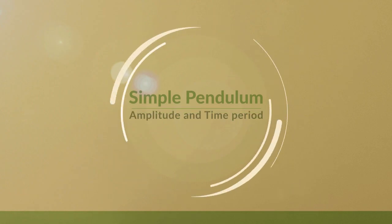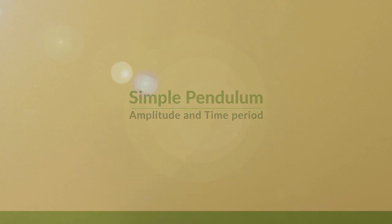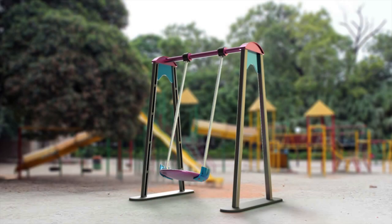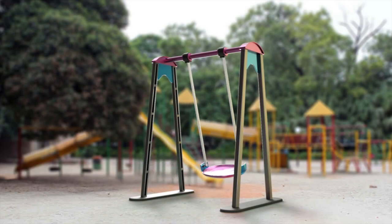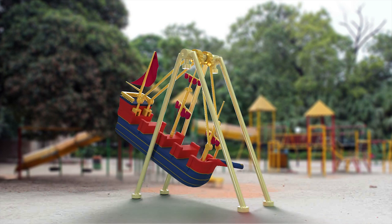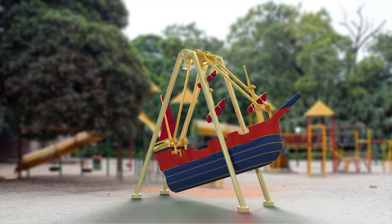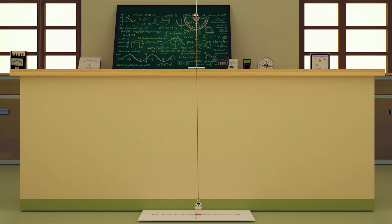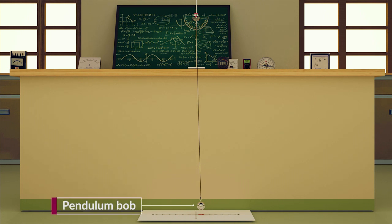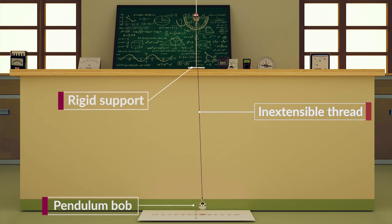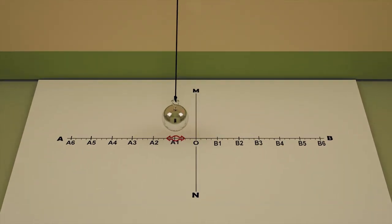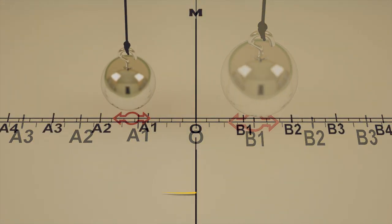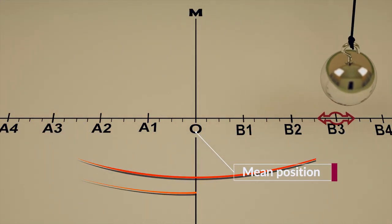Simple pendulum: amplitude and time period. The to-and-fro motion of a swing in the park or that of a pirate ship is called oscillatory motion. A simple pendulum is a similar object — it consists of a small metallic sphere called a pendulum bob, suspended by a light inextensible thread from a rigid support. When displaced to one side, it starts swinging back and forth. The point O is called the mean position of the pendulum.